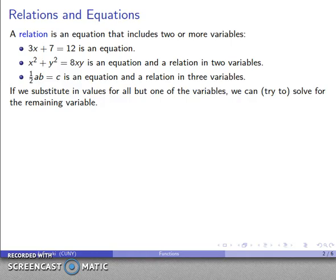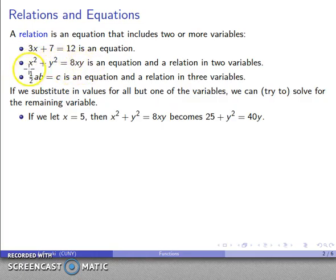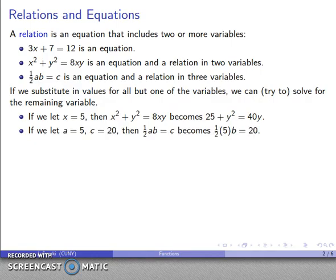If we substitute in values for all but one of the variables, we can at least try to solve for the remaining variable. For example, if we take the relation x squared plus y squared equals 8xy and let x equal 5, the relation becomes an equation in one variable and we can attempt to solve for the remaining variable. Similarly, if we take the relation one-half ab equals c and let a equal 5 and c equal 20, it becomes an equation in one variable.